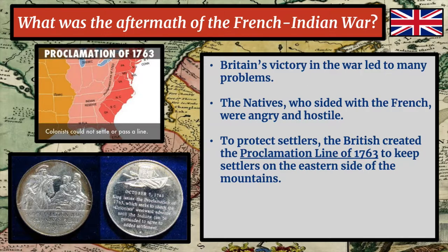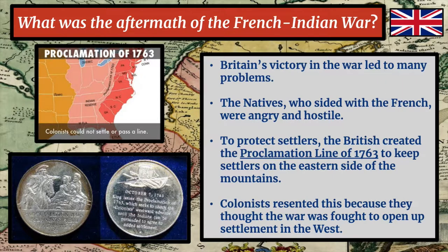This was controversial, to say the least, because from the perspective of the 13 colonies, the entire point of the war was to clear the French out so that colonists could start moving west and laying claim to that land. So all of a sudden, the king of England came along and said, 'Nope, we're going to draw a line and you need to stay on your side.' Chalk this up as strike one in terms of tension between the colonists and the king. All of this pink land was set aside for Native Americans, not for the settlers.